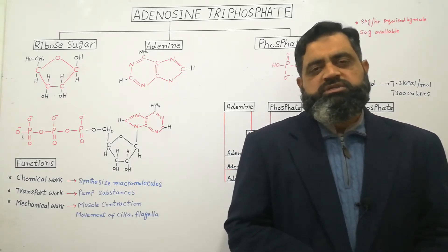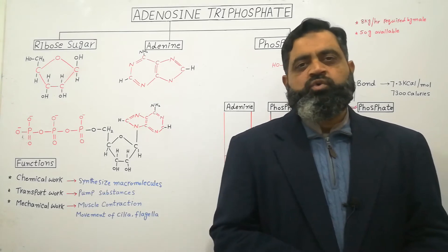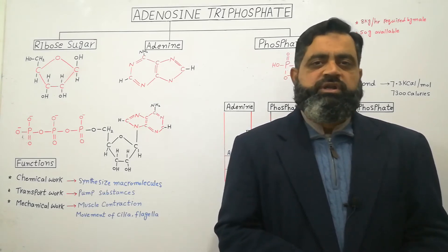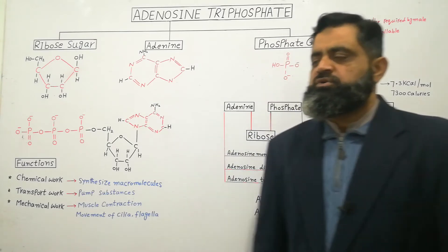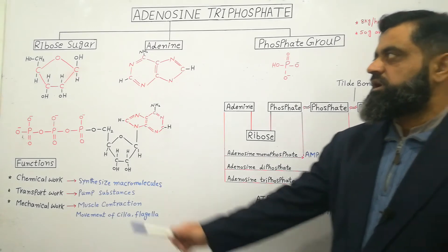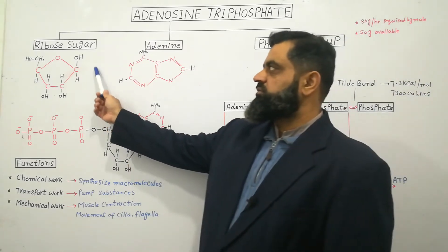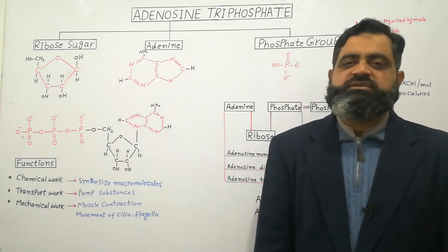ATP molecule is a nucleotide and it requires three components. The first component to synthesize ATP is a sugar — a pentose sugar which is known as ribose.